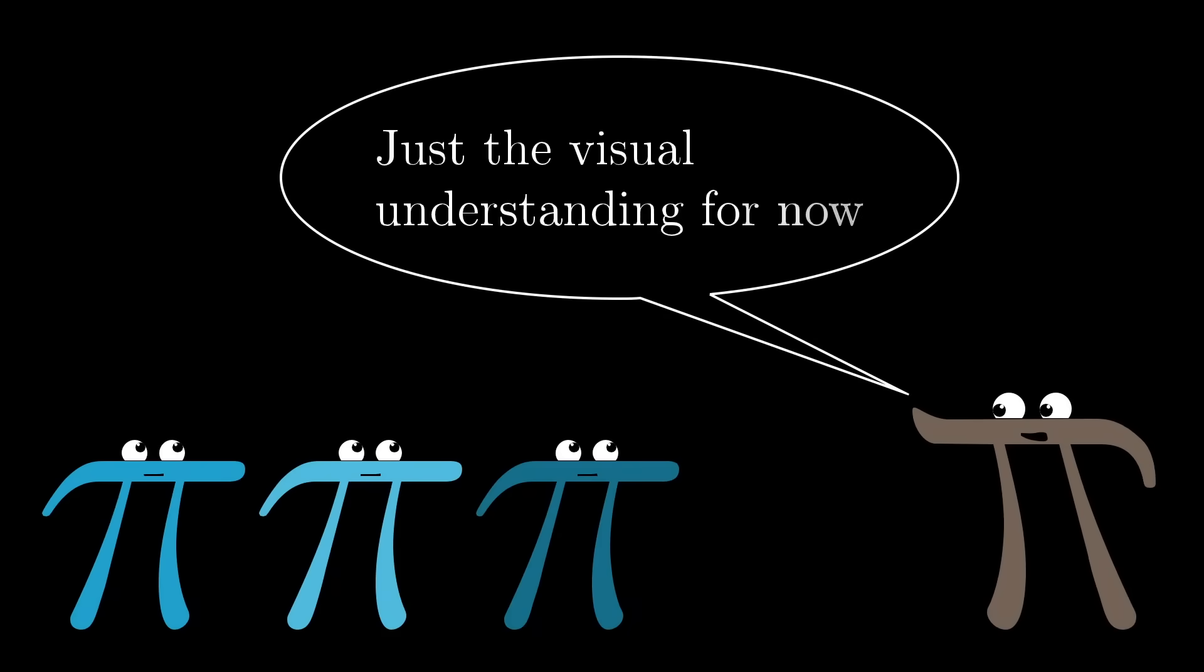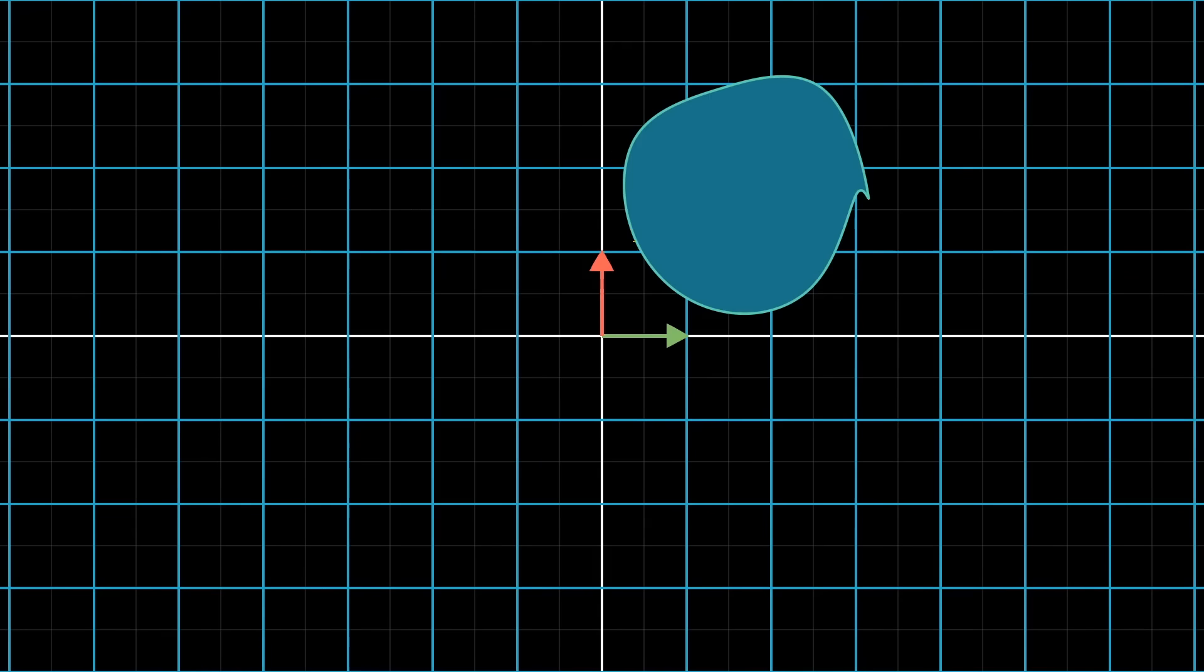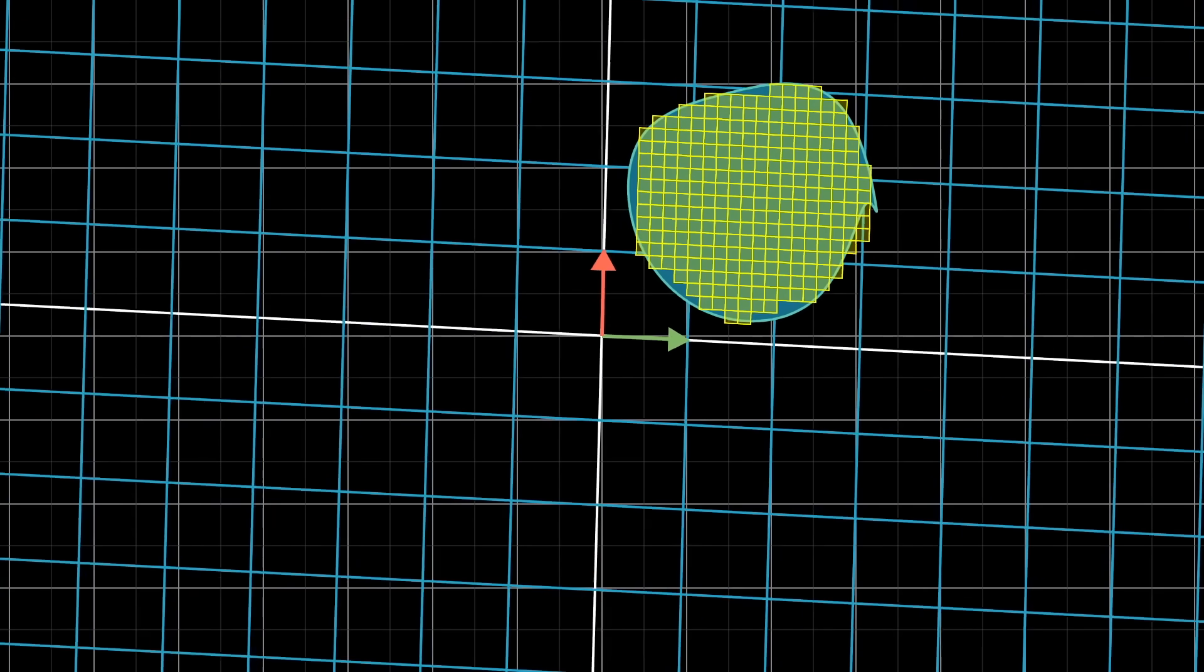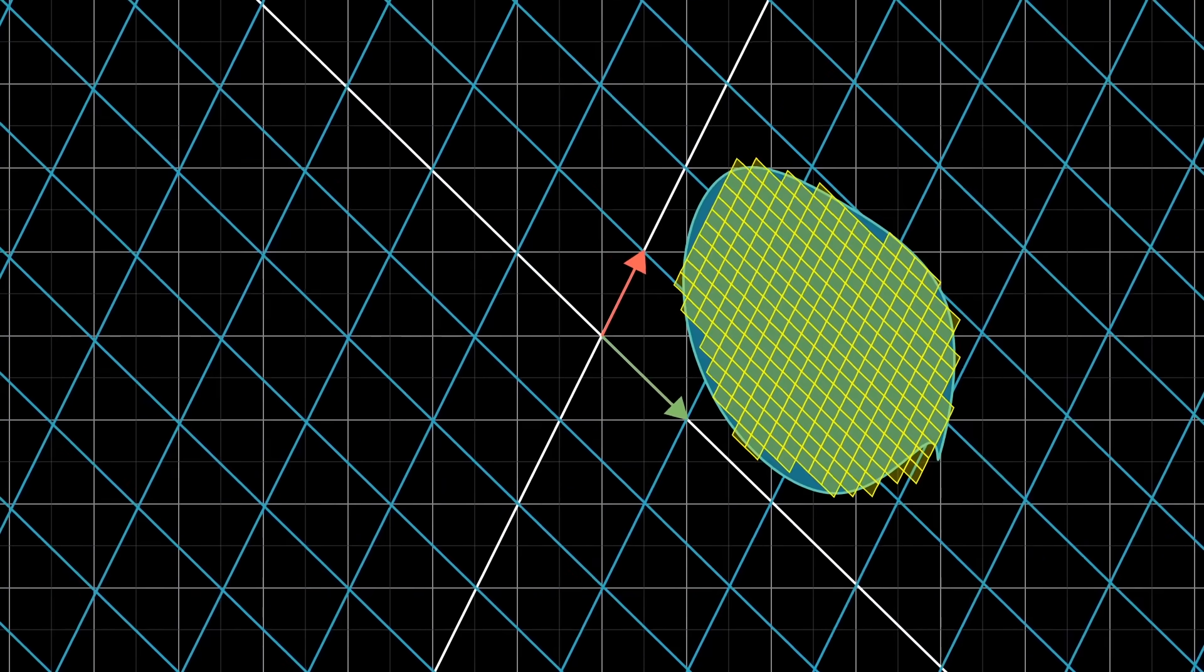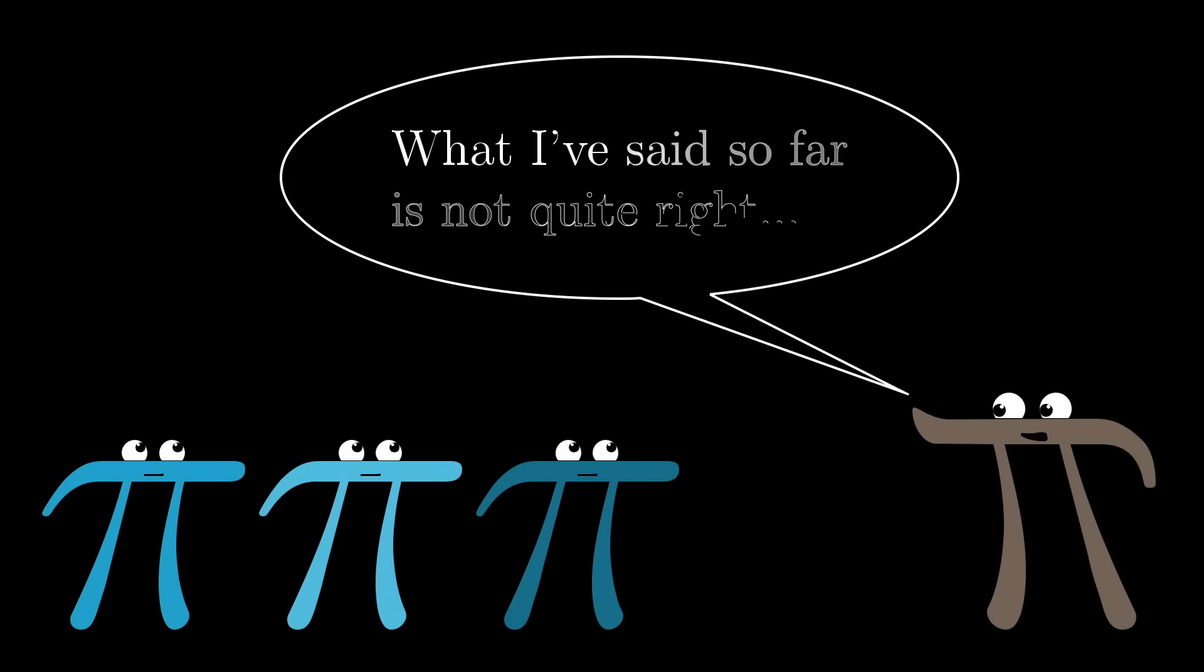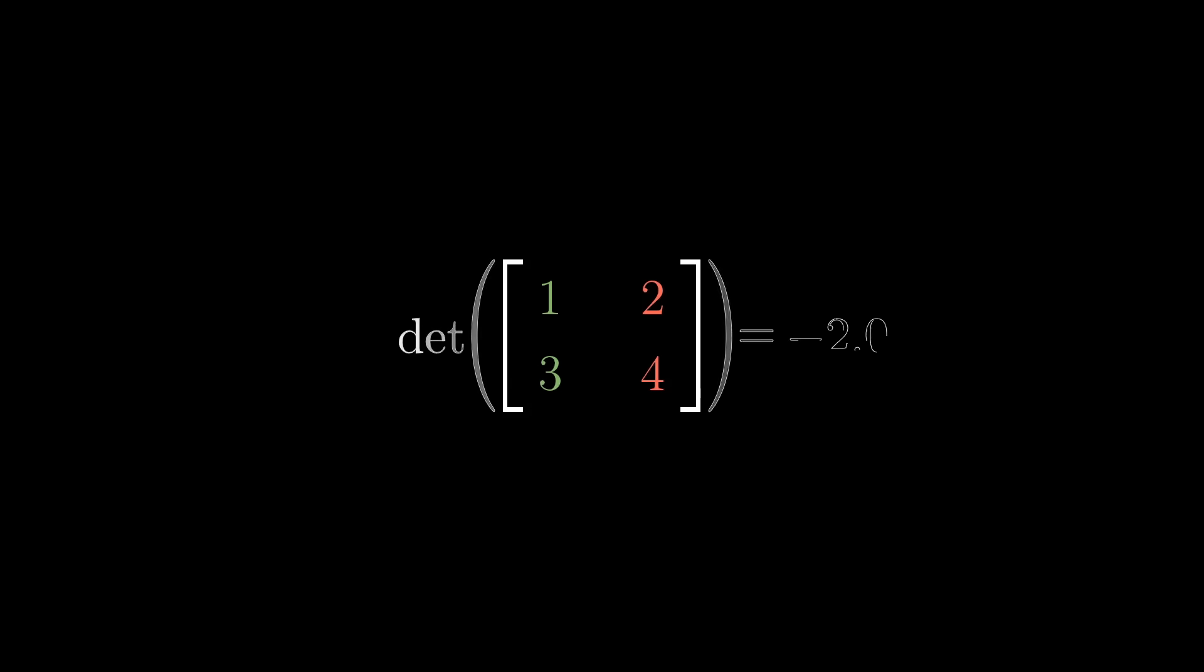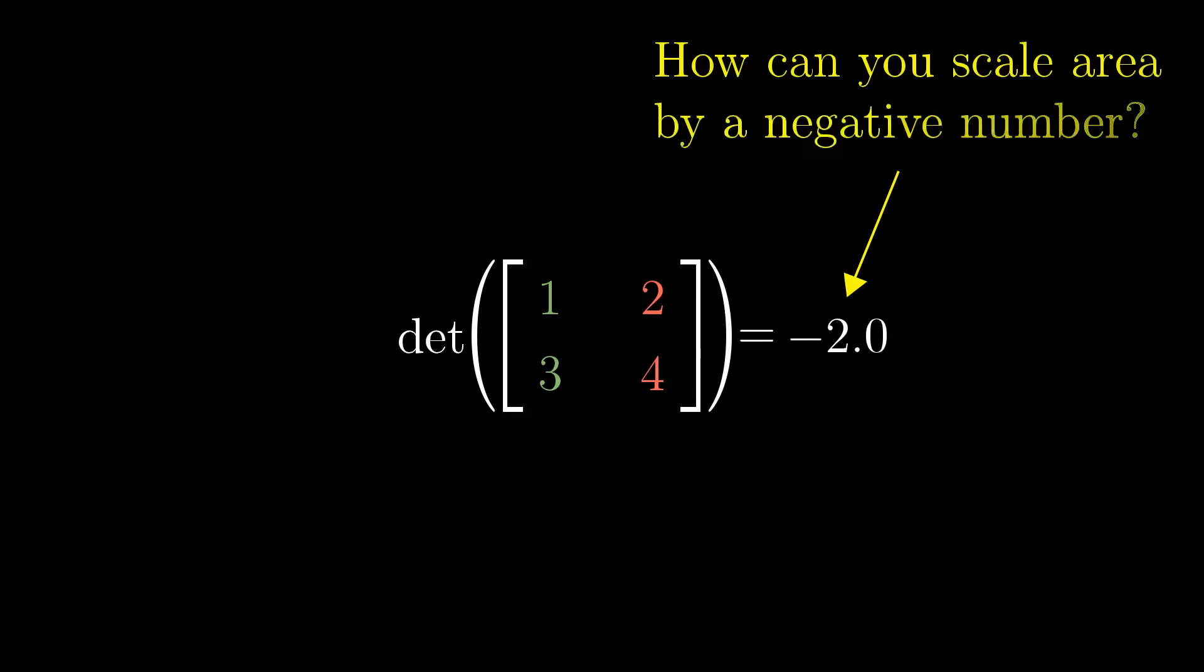You'll see in the next few videos why this is even a useful thing to think about. But for now, I just want to lay down all of the visual intuition. Which, in and of itself, is a beautiful thing to think about. Okay, I need to confess that what I've said so far is not quite right. The full concept of the determinant allows for negative values. But what would the idea of scaling an area by a negative amount even mean?